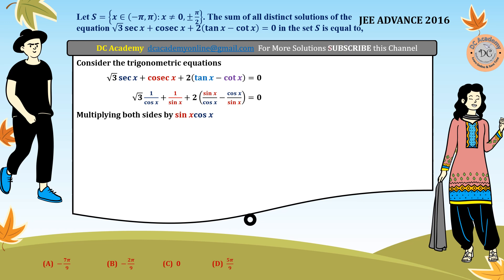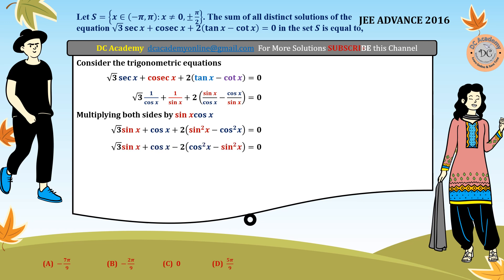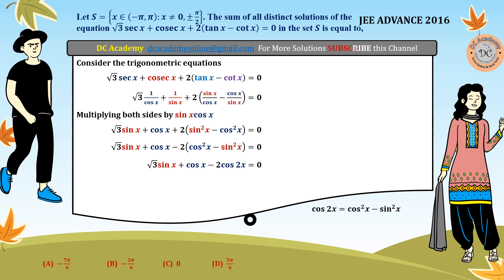After multiplying, the equation is reduced to root 3 sine x plus cos x plus 2 times of sine squared x minus cos squared x, which is very straightforward. Now we take minus 1 common from the last term, rewriting it as minus 2 times of cos squared x minus sine squared x. We know that cos squared x minus sine squared x can be written as cos 2x, so we replace accordingly.